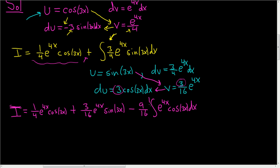dx. And this is where the magic happens. This is the original question. Right, so this is our I. Right, this is what we started with. So I'm going to write it one more time. So we get I equals 1 fourth e to the 4x cosine of 3x.